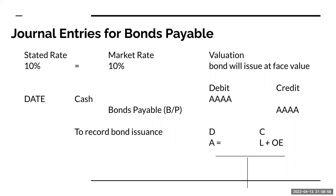Bonds payable is a liability — I increase my liabilities with a credit. Cash is an asset, so I show the increase in cash with a debit. Whenever I'm recording a bond payable transaction, I always have to record the bond payable at the face value. The cash is going to depend upon what the stated rate and market rate is.